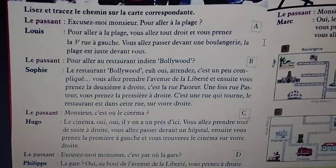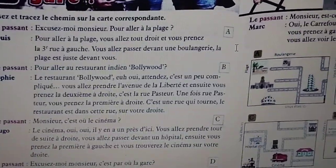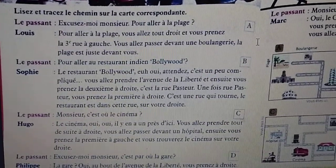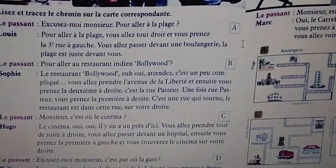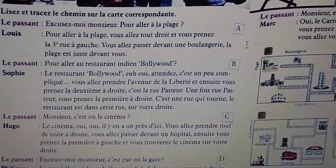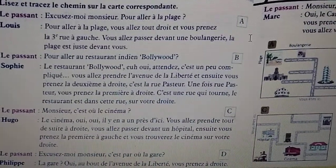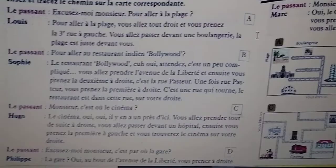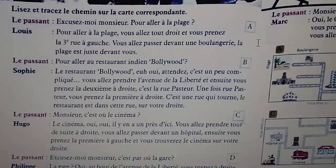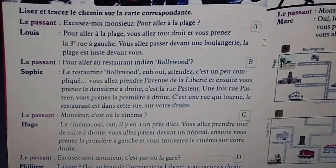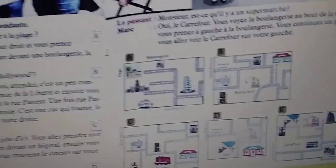The passer-by wants to go to the beach and Louis is helping him by telling him that he should go straight and then take the third street on the left. He will be in front of the bakery and there will be a beach in front of him. This is the first image.